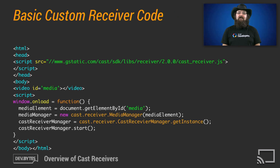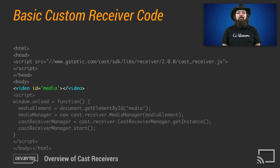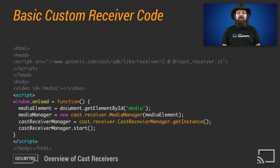Now let's have a look at some code. In a few lines of code, a very basic custom receiver application can be built that plays simple media. First, we load the receiver APIs. Then we ensure that we have a video element — some media element to play back video, music, etc. Once the window onload is fired, identify the media element and create a CAST media manager to handle the sender communication and media events. Then get an instance of the CAST receiver manager, which is responsible for communicating with the CAST system, and tell it to start — which lets the receiver device know that the application is loaded and ready to process sender messages.